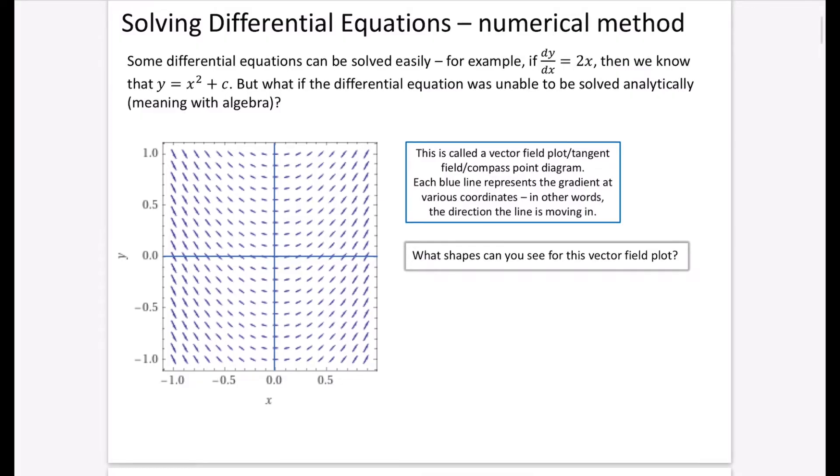What I've done is I have drawn a vector field plot, also called a tangent field, or sometimes called a compass point diagram. I have drawn the compass point diagram of dy by dx equals 2x. I've just taken this from a website called Wolfram Alpha, which is an amazing maths website. In this particular vector field, each blue line represents the gradient at various coordinates for the xy coordinates that we've got. In other words, it's the direction that the line is moving in.